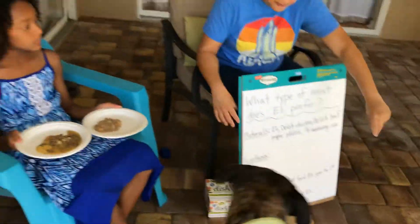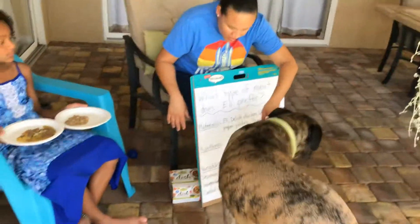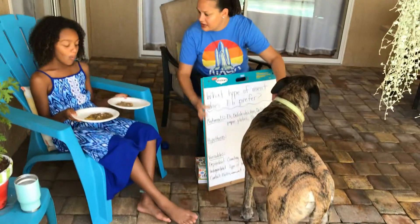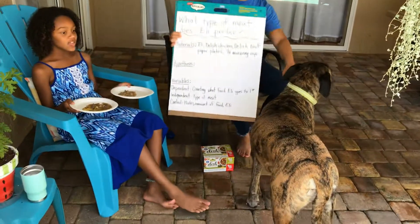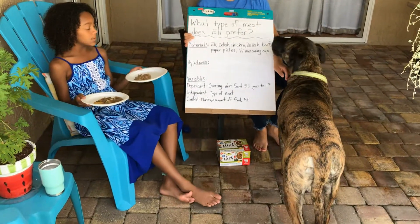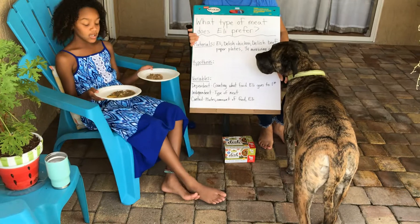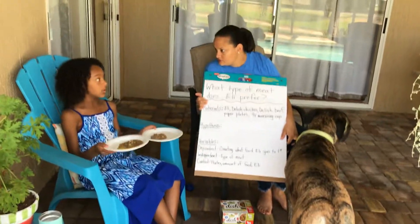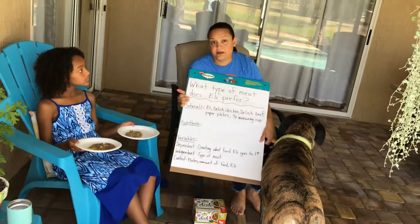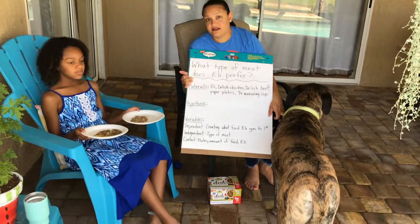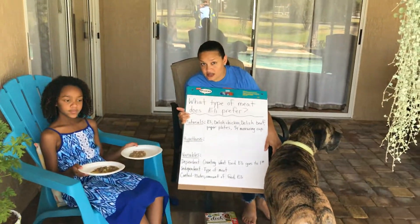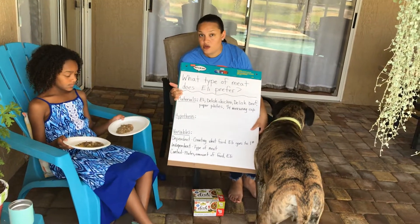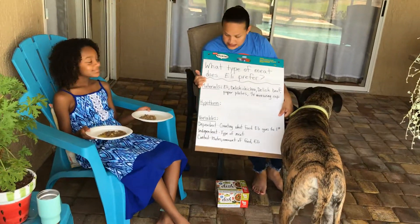Come here Payton. So Payton, what is your hypothesis? What do you think will happen? I think that Eli would go to the beef because he never really often eats chicken. And I think the opposite — since he never eats chicken, he will want the chicken more. So we'll see which prediction is correct.